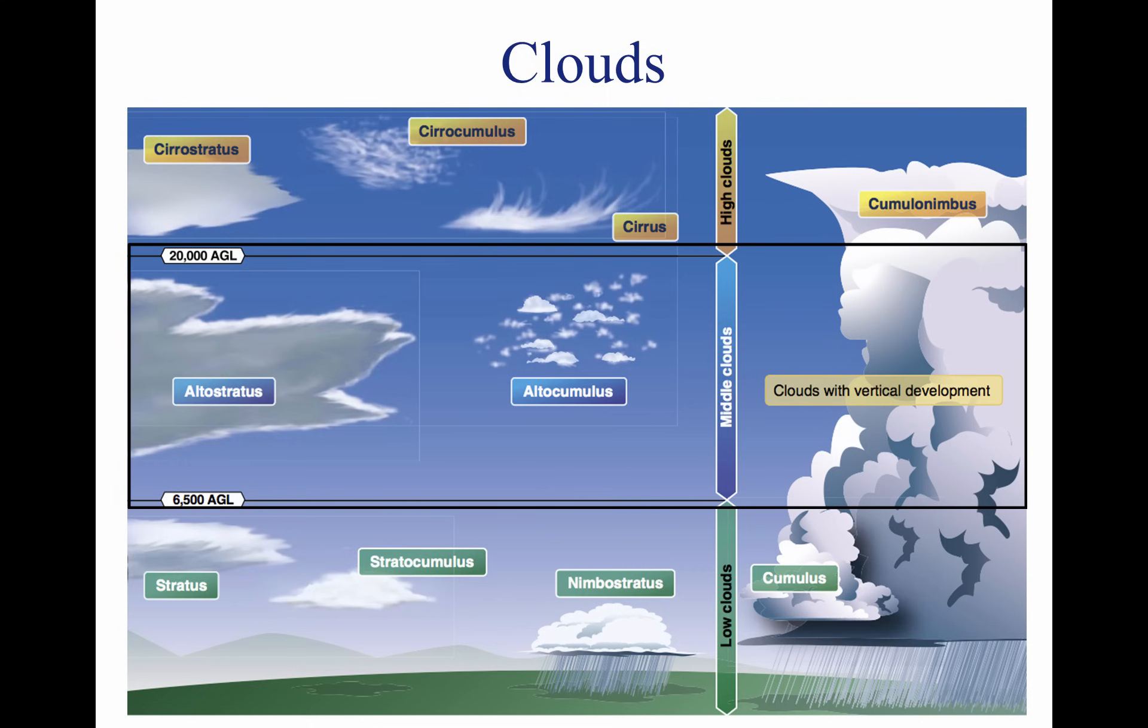Middle clouds form around 6,500 feet AGL and extend up to 20,000 feet AGL. They are composed of water, ice crystals, and supercooled water droplets. Typical middle-level clouds include altostratus and altocumulus. These types of clouds may be encountered on cross-country flights at higher altitudes.